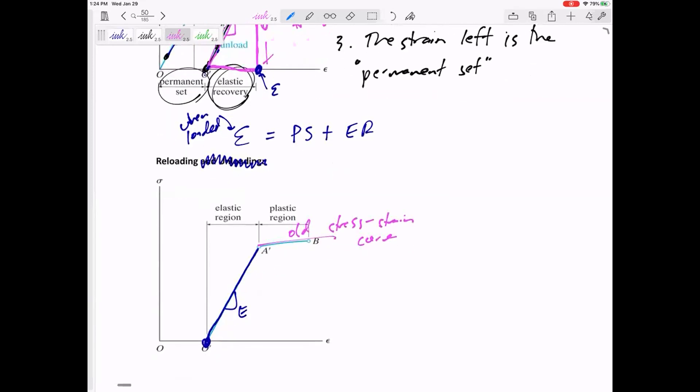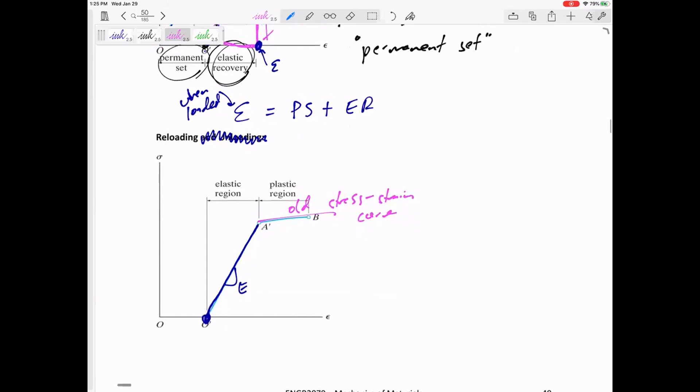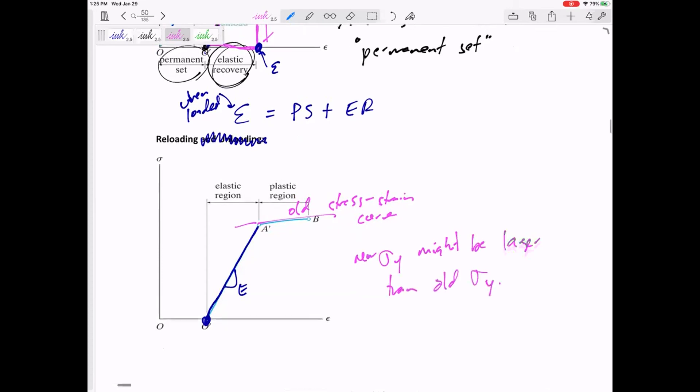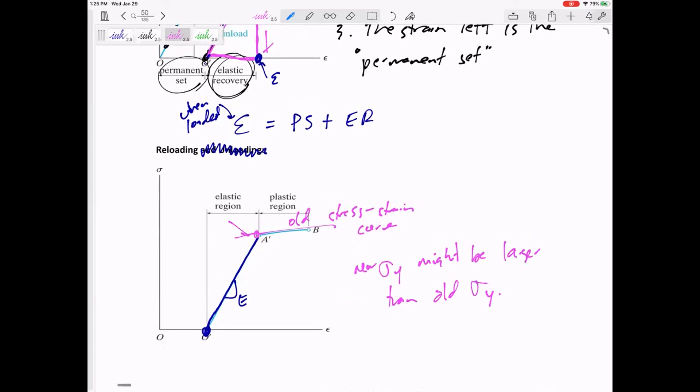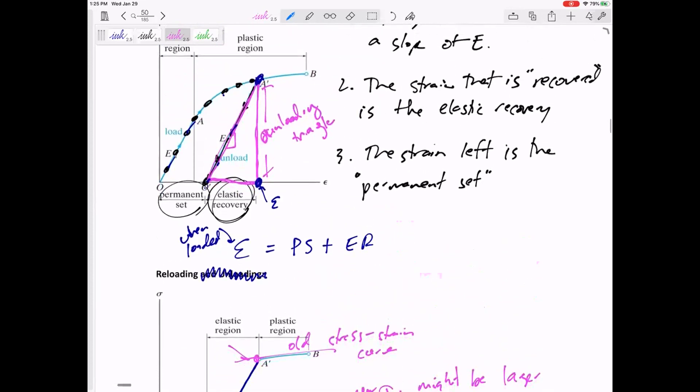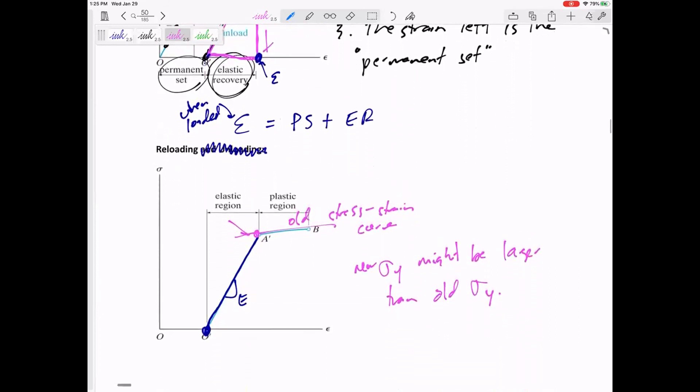So it's almost like we kind of erase this portion, and we have a new stress-strain curve. So there are benefits to actually, and this is strain hardening. There's benefits to actually loading something, stretching it, and unloading it, because now you have a new stress-strain curve, and this new sigma-y might be larger than your old sigma-y. So now my new sigma-y is right there, as opposed to right here with the old diagram.